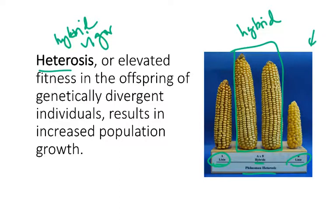In the example with the fish shown previously, hybrid vigor leads to this increased population growth.